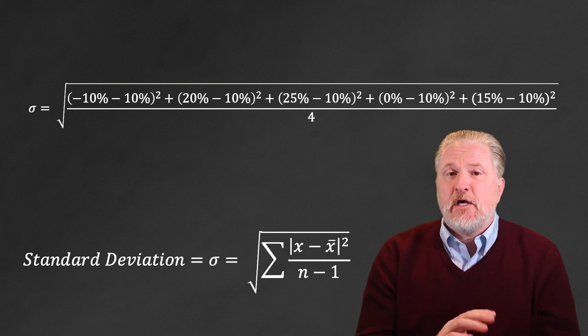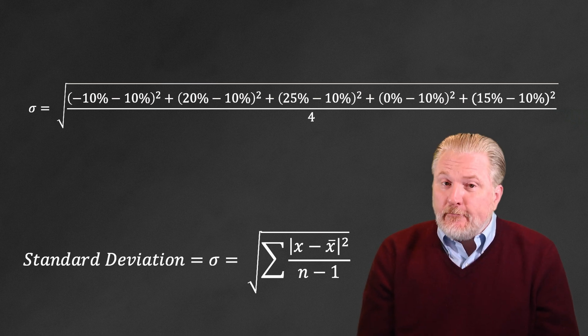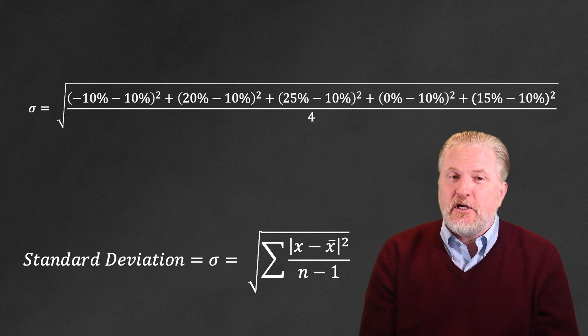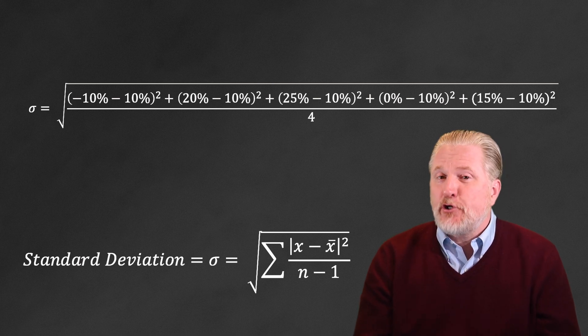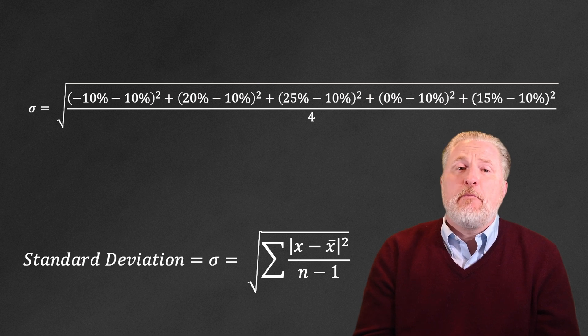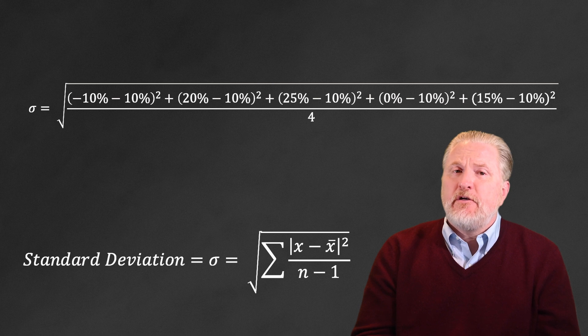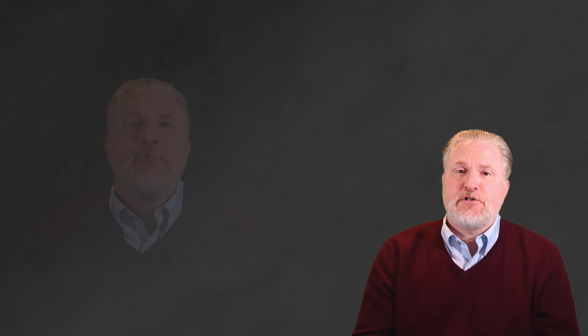Plus 0%, the return of the fourth year, minus the 10% average return, squared again. Plus 15%, the return of the last year, minus 10%, the average return across all five years, again squared. Add all of that up and divide by the number 4, which is five observations minus 1, then we get a standard deviation of 14.6%.